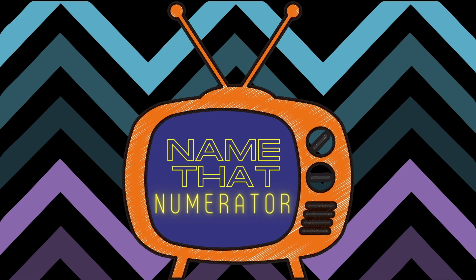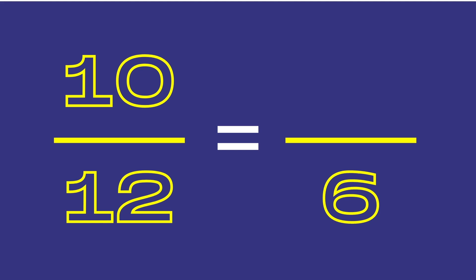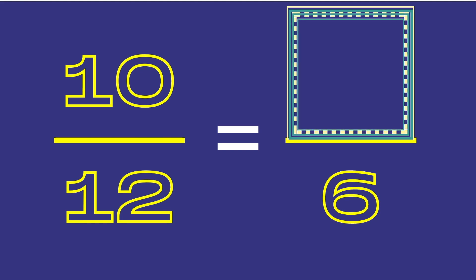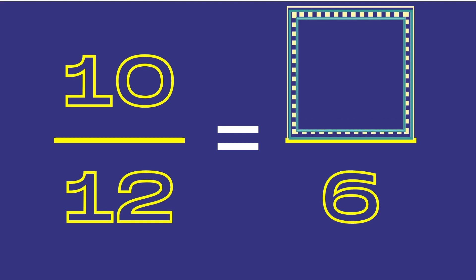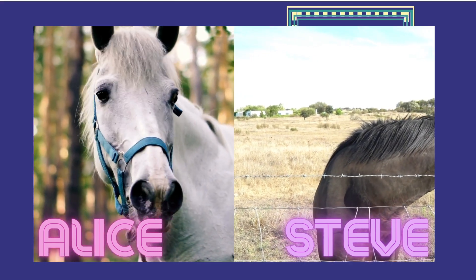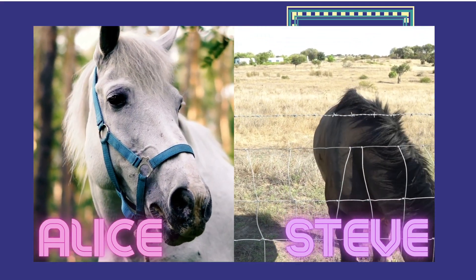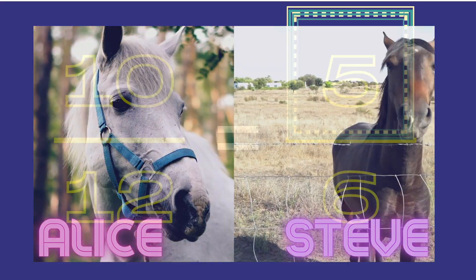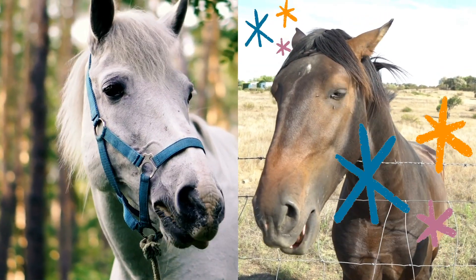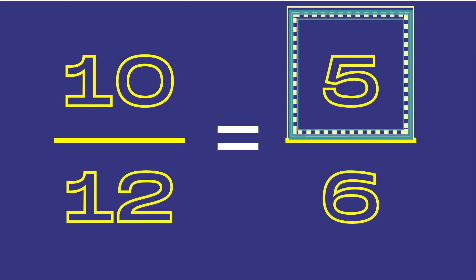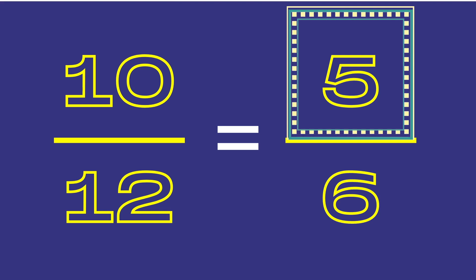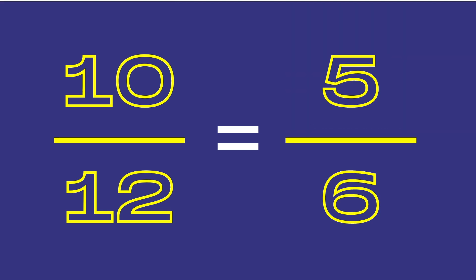Let's name that numerator. Here are two equivalent fractions. Name the missing numerator. Well, Glyn, I have been studying equivalent fractions for many years now, and I do believe the correct answer is 5. That is correct, Steve. The missing numerator is 5. 12 divided by 2 gives us 6 for the denominator, and 10 divided by 2 gives us 5 for the numerator. 10 twelfths and 5 sixths are equivalent fractions.